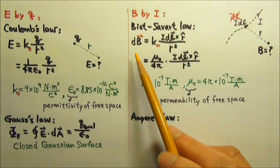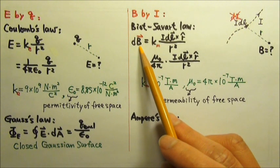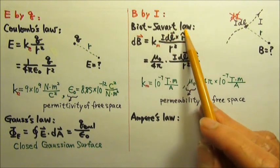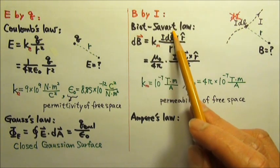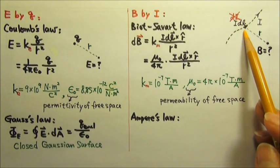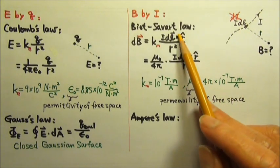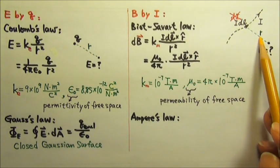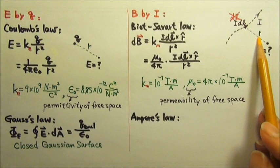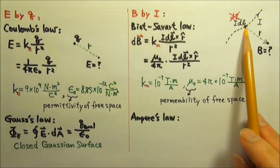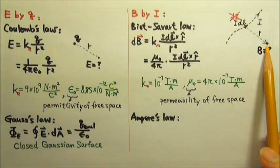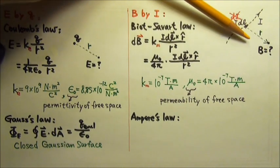Now let's look at the direction of vector dB. dB gets its direction from this cross product. dL gets its direction from the current I. The unit vector r has the same direction as r. And r goes from the source to the location we're interested in. So r goes that way.